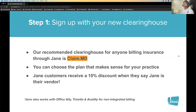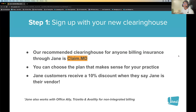Speaking of ClaimMD, there are multiple price points and plans you can choose. Since everyone here is using Jane, you'll also get a 10% discount code if you select Jane as your vendor, which reduces the price for clinics. You can still use Office Ally, Trizetto, or Availity if you're already using those or considering them. Note that those three are for non-integrated billing. One reason we recommend ClaimMD is that it is fully integrated within Jane, lessening the steps clinics would have to take to submit claims.